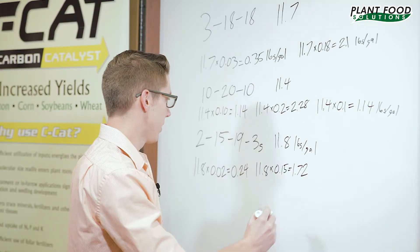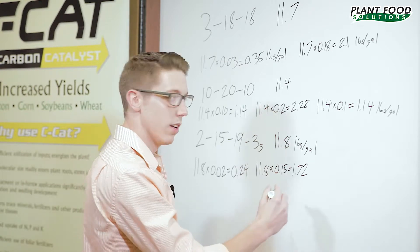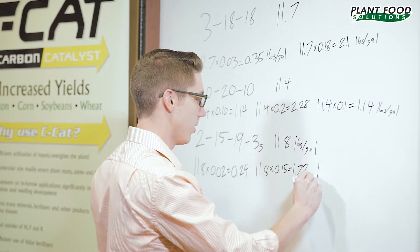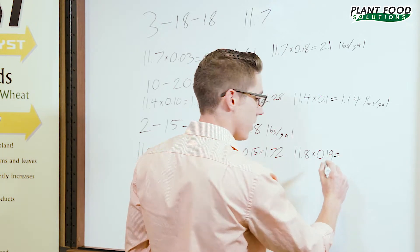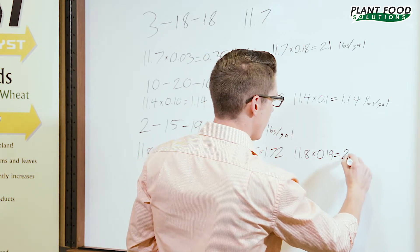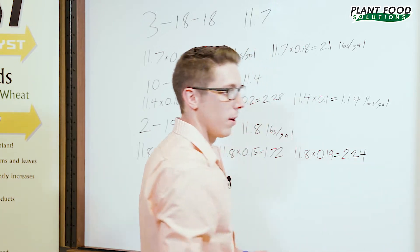Your potassium is going to be 19%. So 11.8 times 0.19, it's going to be 2.24 pounds to the gallon.